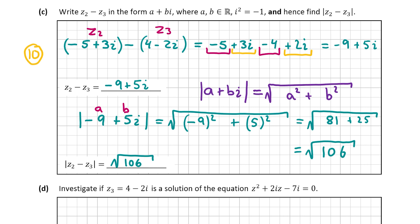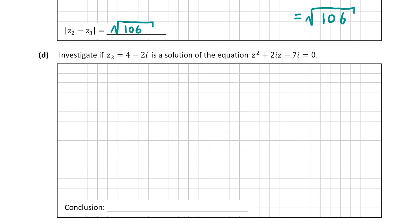Now let's look at part d. Here we have to investigate if 4 minus 2i is a solution of that particular equation. To find out if a value is a solution you substitute it in for the variable z, and if you get zero then it is a solution, but if you don't get zero then it is not a solution. So we put 4 minus 2i in place of z into the equation.